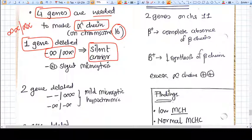Silent carrier means there is no significant disease. It's a very asymptomatic kind of disorder with only some amount of microcytosis seen. These are called silent carriers. Thalassemia is also an autosomal recessive disorder.